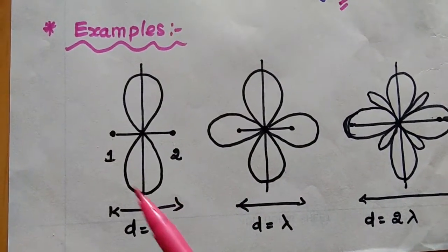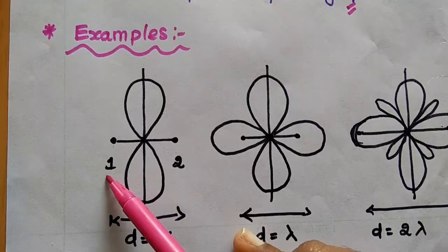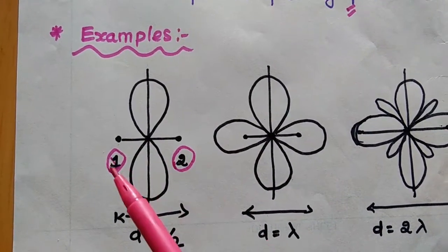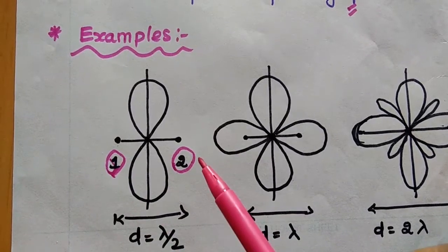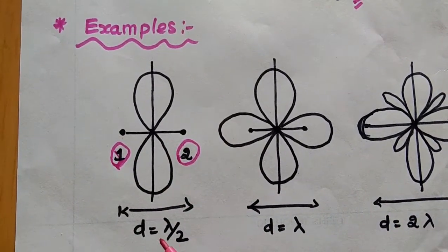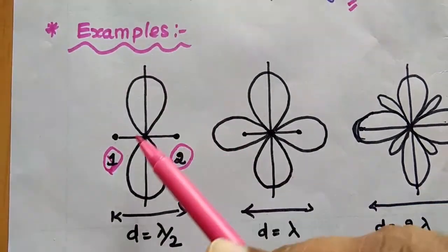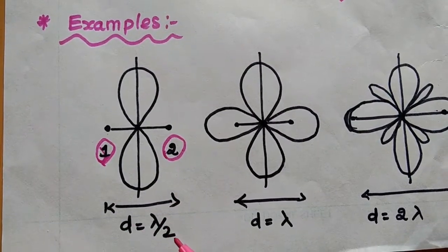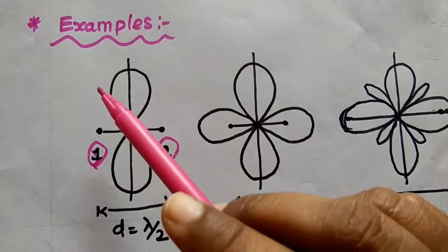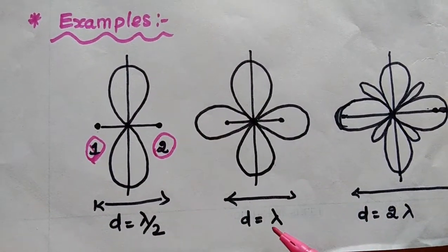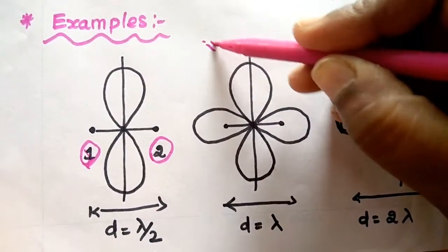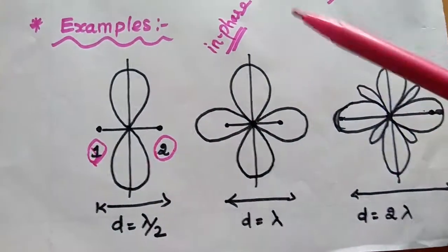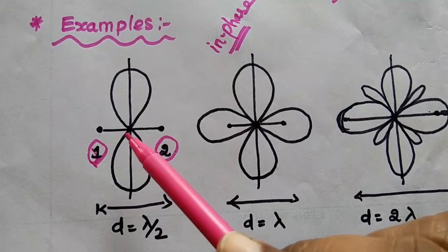Let us start with some examples. Consider two individual elements separated by a distance λ/2. These two elements are not connected — they are individual elements. Because of these two elements separated by λ/2, the radiation pattern is bidirectional. All elements are fed with in-phase currents, which is why the radiation is perpendicular. This is a very important point.